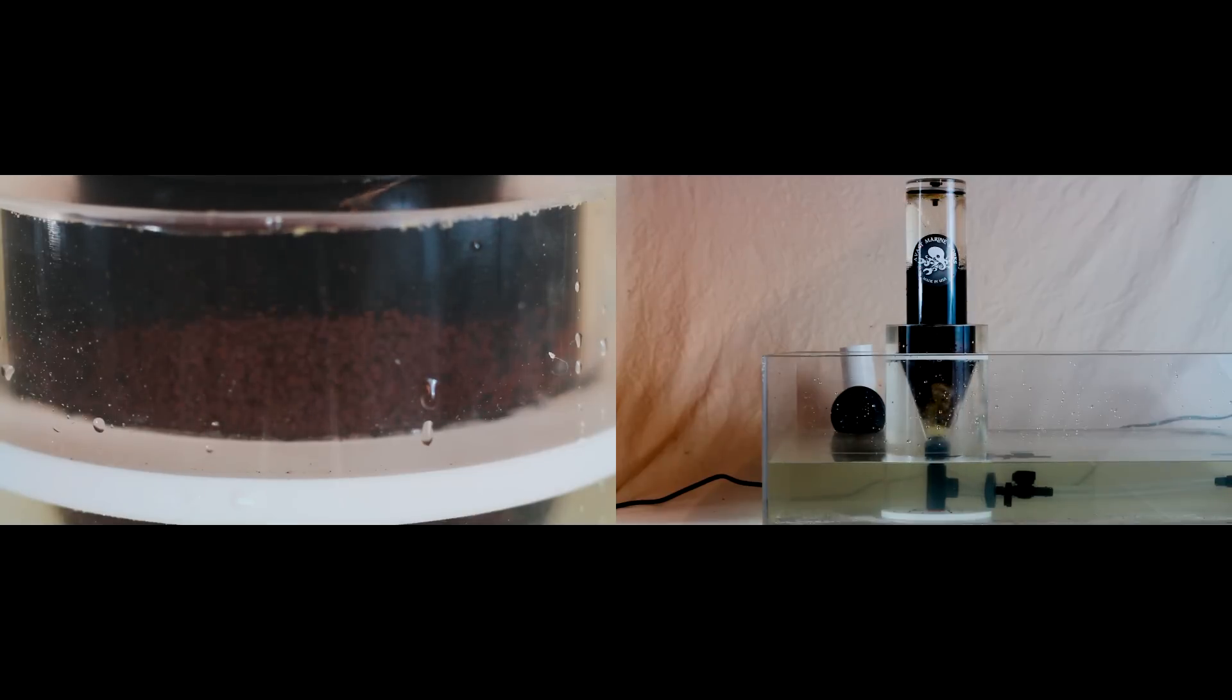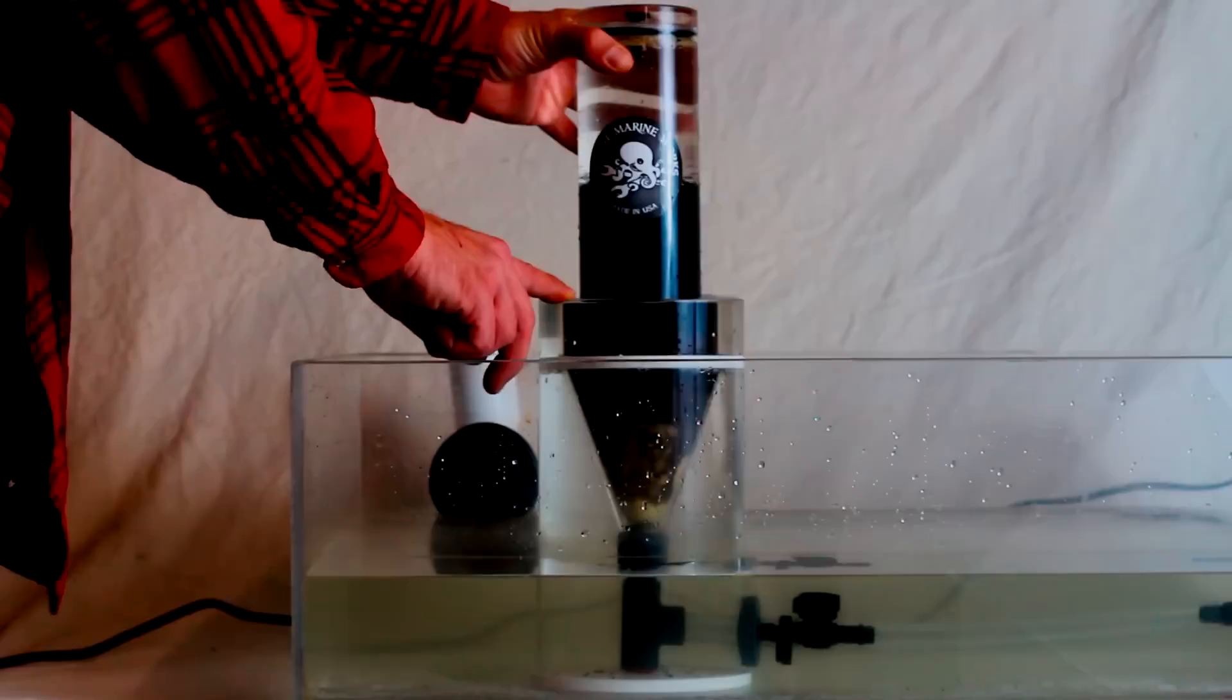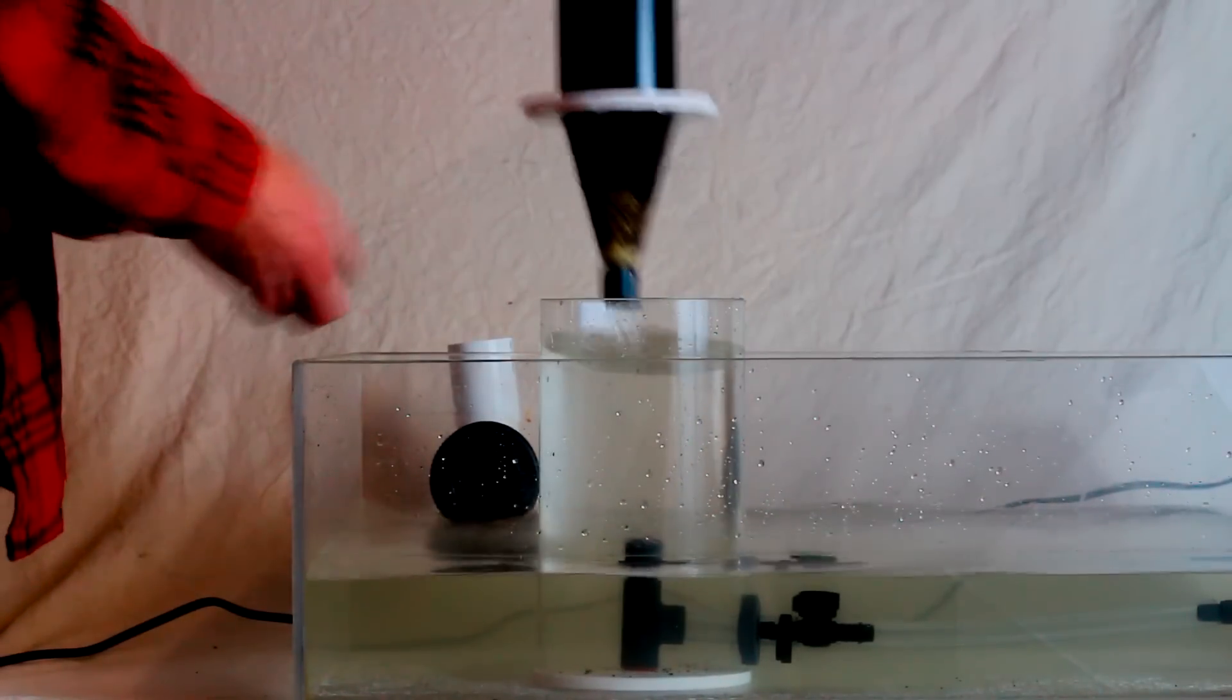We put a small handful of sand in the reactor as well, just to highlight the flow pattern in the bottom of the cone as it gently swirls around the ball. This is by far the easiest reactor on the market to maintain.